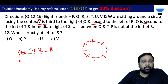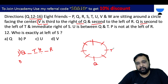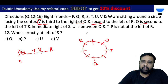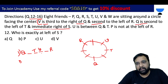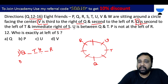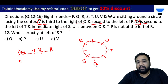V is the third right of Q. T is to the right of V. V is to the right of R. Q is to the left of T. Q is to the right of S. S is confirmed to the right — so S is placed next to Q.